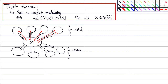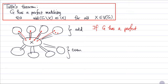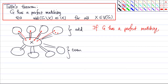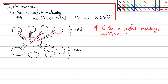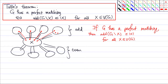What we know is the following: if G has a perfect matching, then the easy necessary condition is that the number of odd components — which we write as odd(G\X) — has to be small. It's at most |X| for all possible subsets of the vertex set. So this is the easy necessary condition.